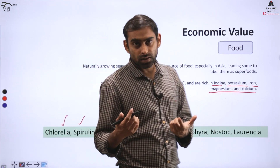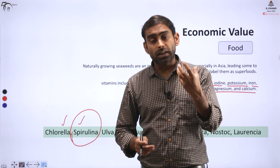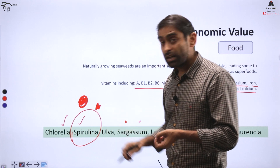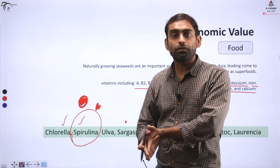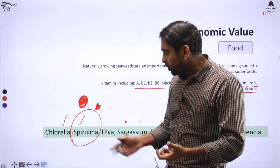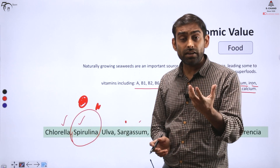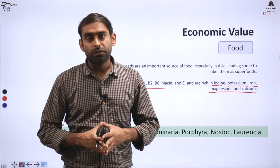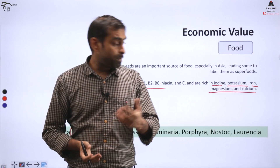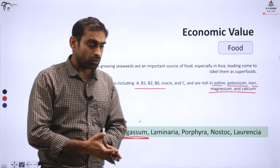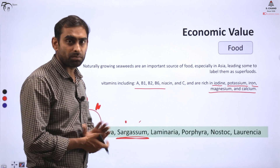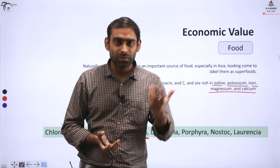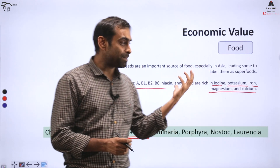One algae worth emphasizing is spirulina. Spirulina is also known as single cell protein. It is a single-celled microscopic algae with a very high protein content. You might find tablets made from spirulina even in medical stores — they are green-colored tablets that are a very rich source of proteins. They also synthesize essential amino acids, so one can consume them in case of protein deficiency or for high nutritional value in tablet form.